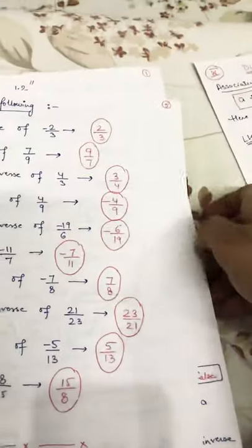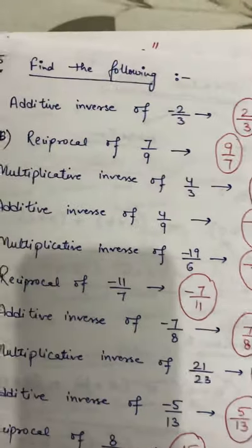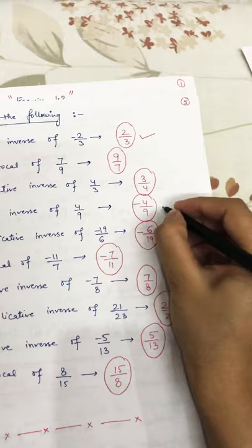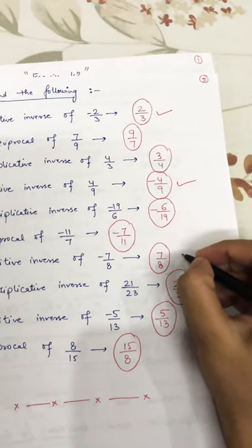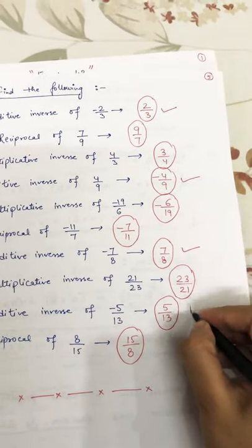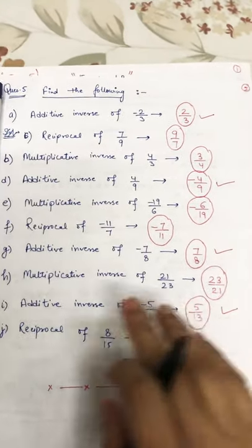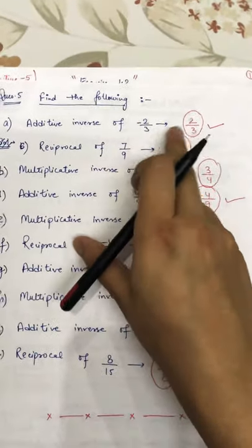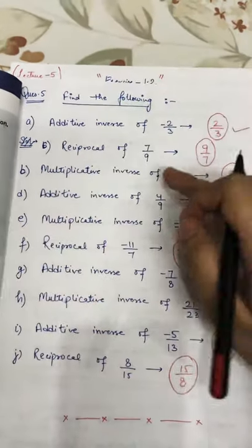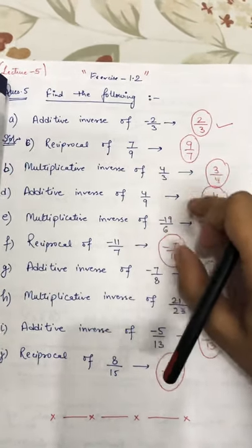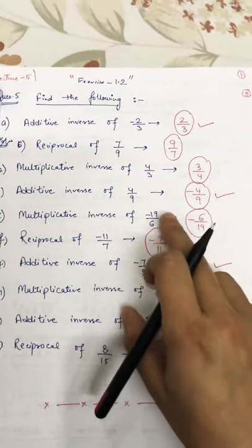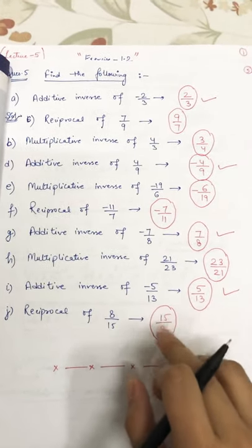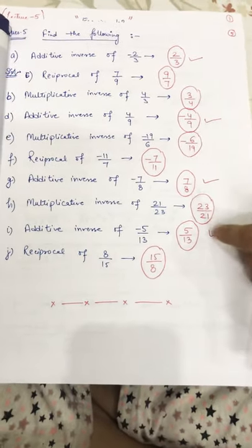Let me summarize: for additive inverse, the value stays the same and only the sign is opposite. Check these four parts — in all four parts, the values are the same and only the sign is opposite. For the rest — multiplicative inverse and reciprocal — these are the same thing with the same meaning: 7 upon 9 becomes 9 upon 7, 4 by 3 becomes 3 by 4, minus 19 upon 6 becomes minus 6 upon 19, 21 upon 23 becomes 23 upon 21, and 8 upon 15 becomes 15 upon 8.